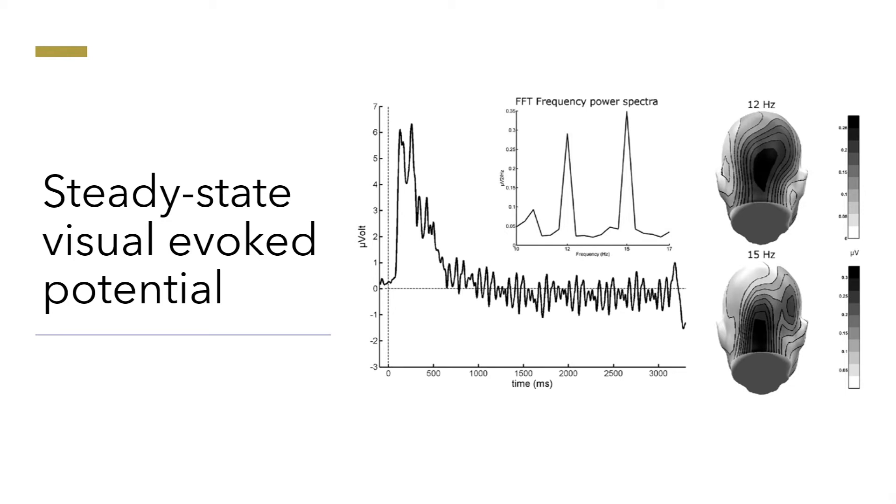Hence, steady-state visually evoked potentials are defined as the potential elicited by the change in the visual field with a frequency higher than 6 Hz. The resonance phenomenon is shown. The presence of SSVEP is usually acquired from various electrode sites.